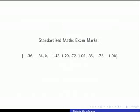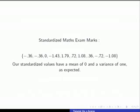If we calculate the mean and variance of our standardized values, we see that the mean is 0 and the variance is 1.